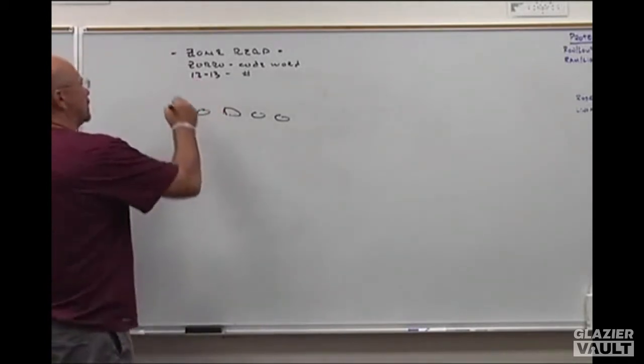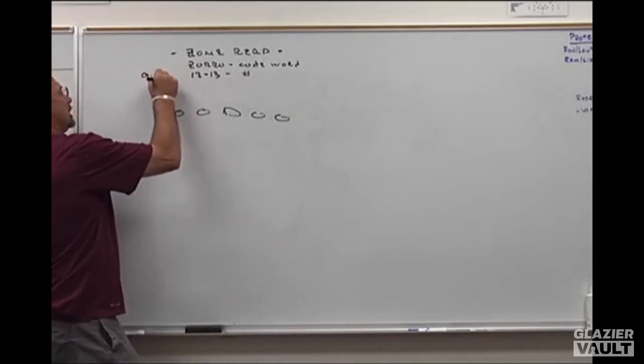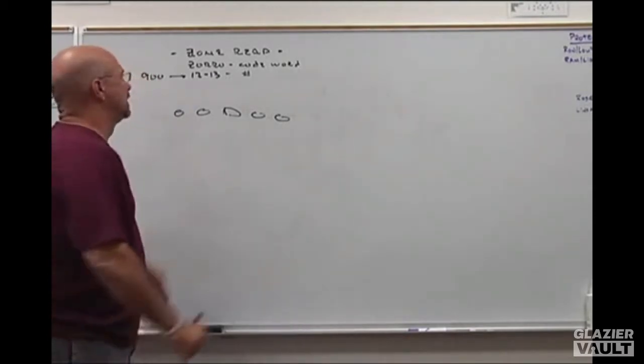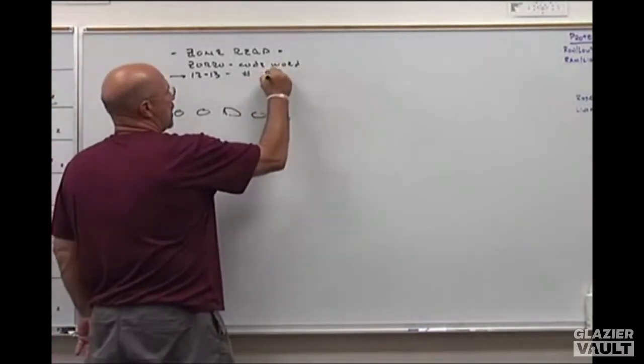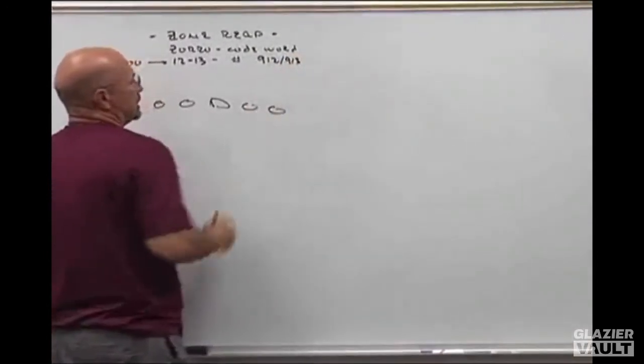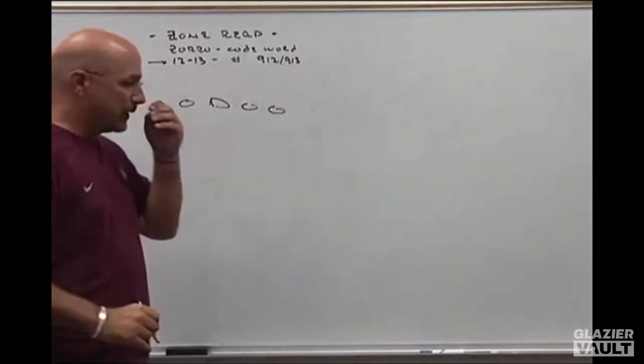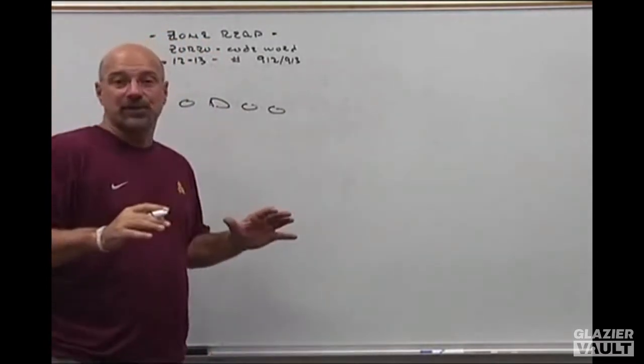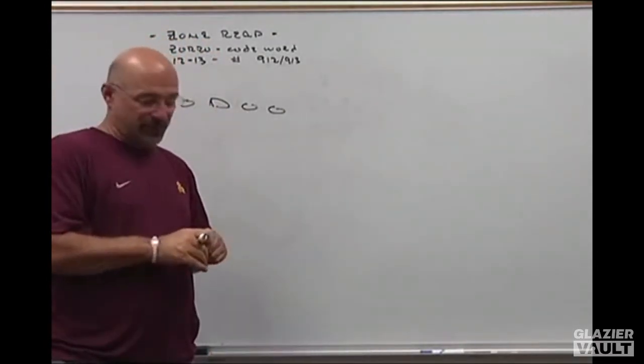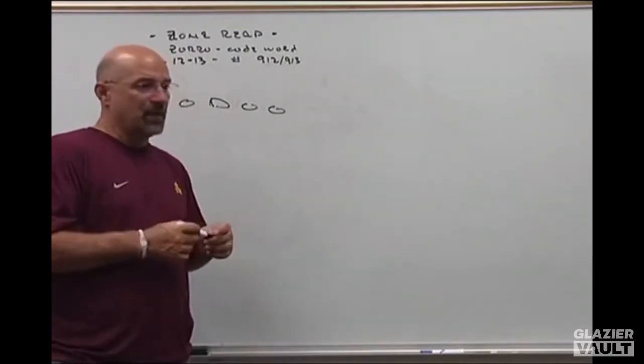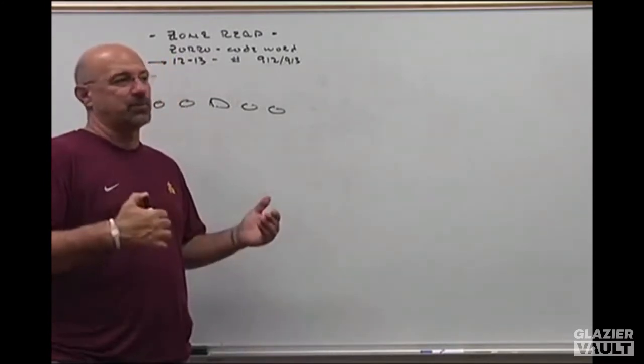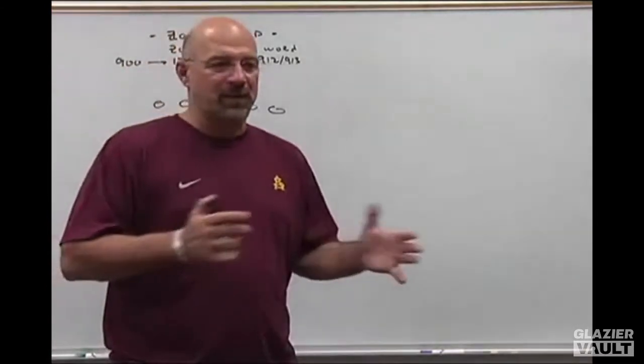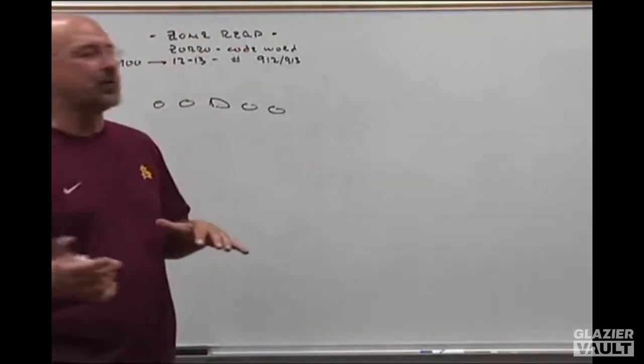And what we'll do is we'll just tag that with a 900, which tells the O-line, tells everybody that's our zone read play. So example, this would be 9-12 or 9-13. So the course of the game, if we feel that that's becoming an issue, which hasn't been up to this point, basically the defense is still just trying to get locked up as quick as they can, but we can use two different ways to call the same play. Either call Zorro odd-even, Zorro big-small, Zorro hot-cold, meaning right or left, or you can just go 9-12, 9-13.